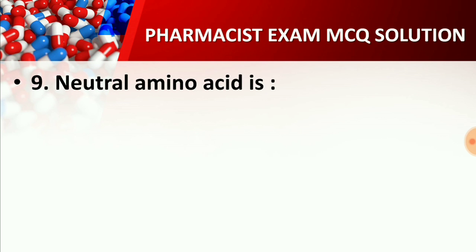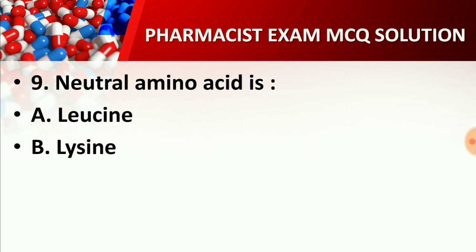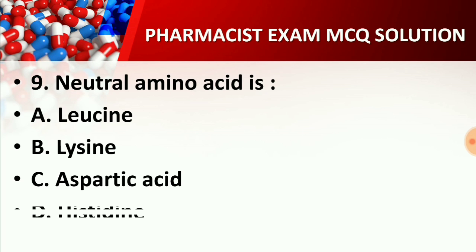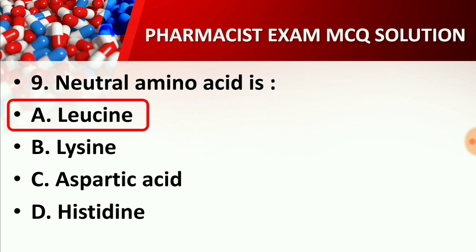Question number nine: Neutral amino acid is — Option A: Leucine, Option B: Lysine, Option C: Aspartic acid, Option D: Histidine. The right answer is Option A: Leucine. Leucine is a neutral type amino acid. You should study amino acid classification for exam preparation.